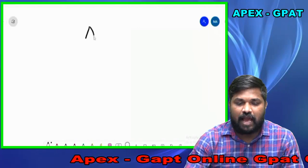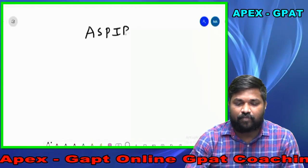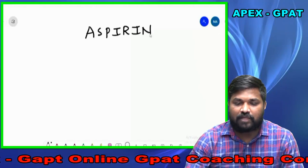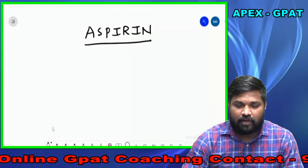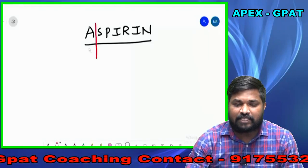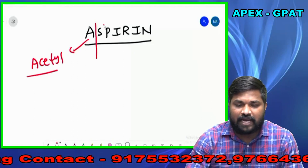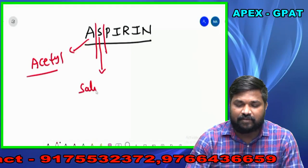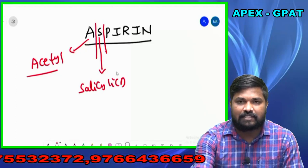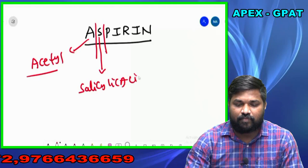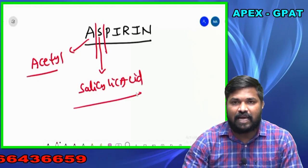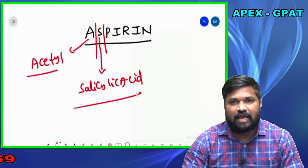Hello everyone. In this video lecture we will talk about some important medicinal chemistry structures. The first structure is Aspirin. How to remember aspirin in a simple way: A stands for Acetyl and A stands for Salicylic Acid, so that is Acetyl Salicylic Acid. We call it as Aspirin.